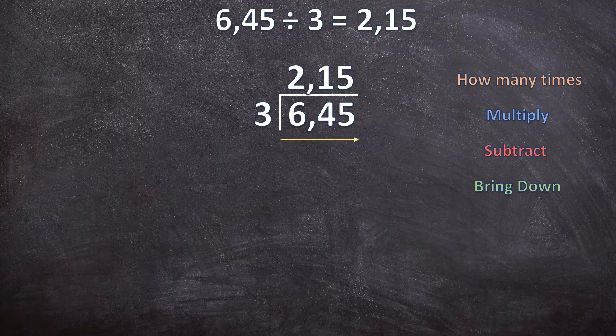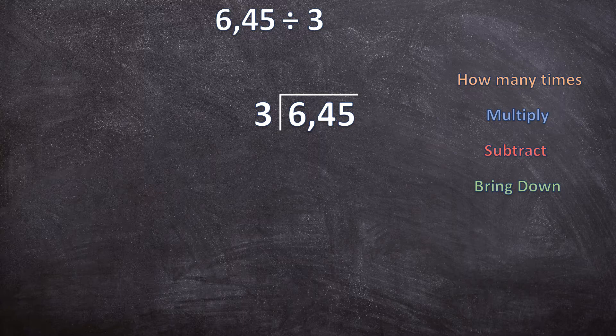There are two extra steps to remember when dividing a decimal number by a whole number. Before we start dividing, we are already going to write the comma of the answer, because the comma in the answer goes exactly above the comma in the dividend. The second extra step is that for the rest of the division we ignore the comma in the dividend and treat it as a whole number.